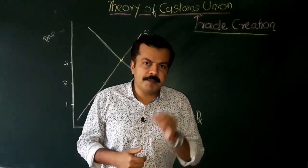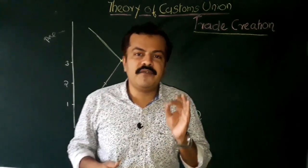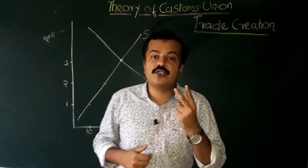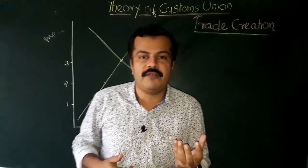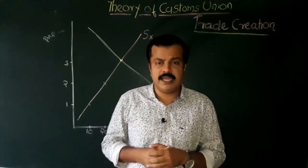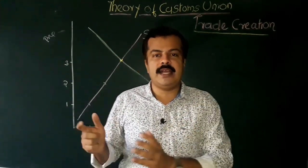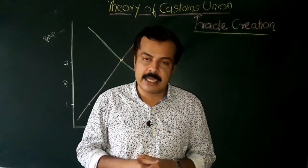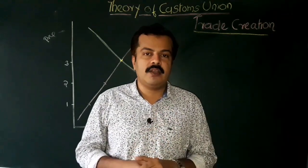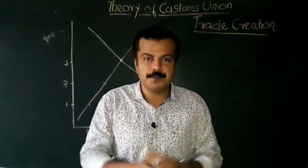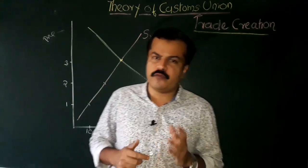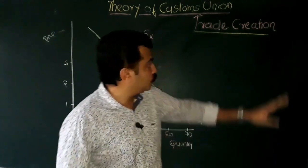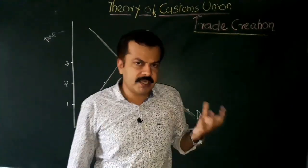Today we will be focusing on the effect of economic integration, or the theory associated with economic integration. There are two partial or static effects of economic integration, namely the concept of trade creation as well as trade diversion. These two concepts were coined by economist Jacob Viner in his work in the year 1950 called 'The Customs Union Issue'. We will be looking at Jacob Viner's arguments and how he explains trade creation. For today, we'll only be looking at the concept of trade creation.